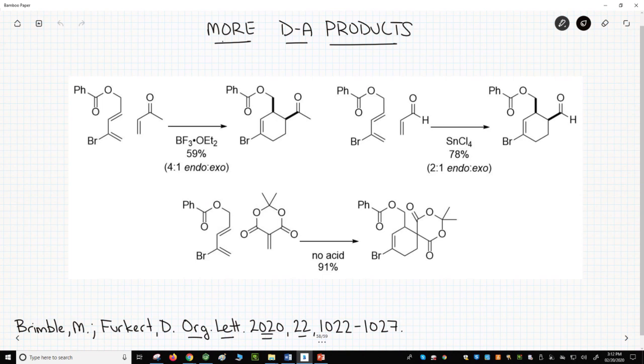On this slide are some reactions from the Brimble paper. Starting with fairly simple starting materials, one can access new products with rings, predictable stereochemistry, and useful functional groups - carbonyls, alkenes, and halides - for subsequent chemistry, all in a one-step reaction. This is the appeal of the Diels-Alder reaction and why the reaction is so useful.